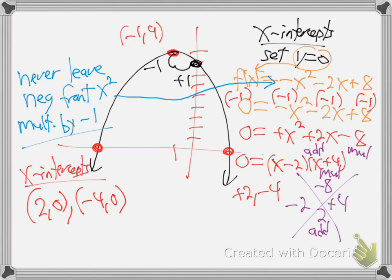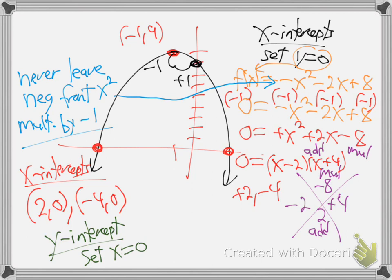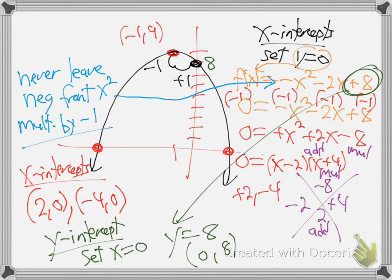We're almost done. What's the last thing? The y-intercept. Remember what you do? You set x to zero. To find intercepts you're always setting the opposite letter to zero. To find y-intercepts, make x zero. Whenever you plug in zero for x, all the x's drop off. What's y going to be? 8. It's always just that last number - the c in abc. That's always going to be the y-intercept, because when you plug in x zero, the x squared and the regular x drop out every time.